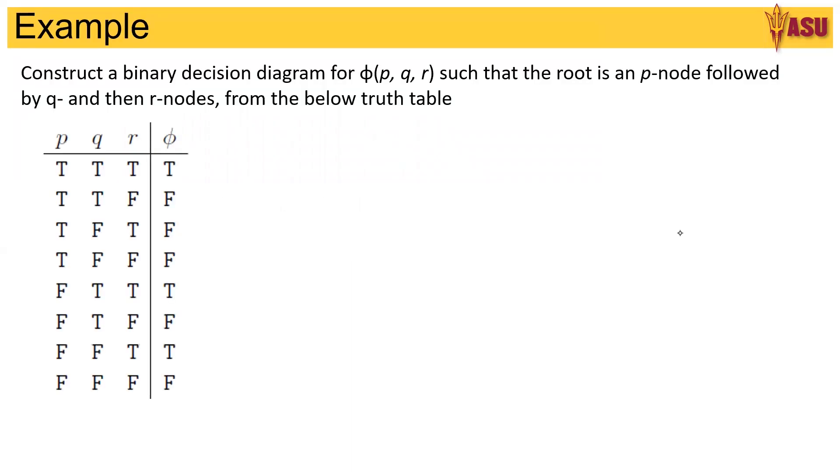It says construct a binary decision diagram for φ such that the root is a p-node followed by q and then r-nodes from the below truth table. So we have a truth table given to us p, q, r, and φ, and we have to draw the binary decision diagram.